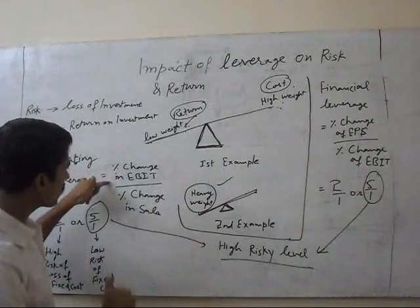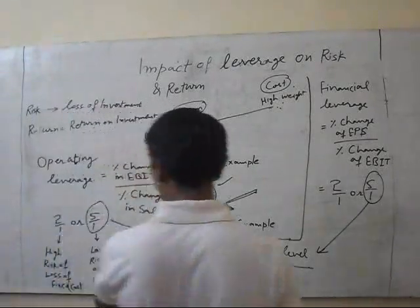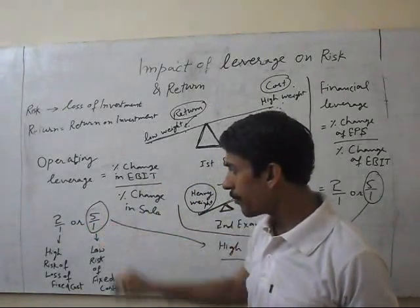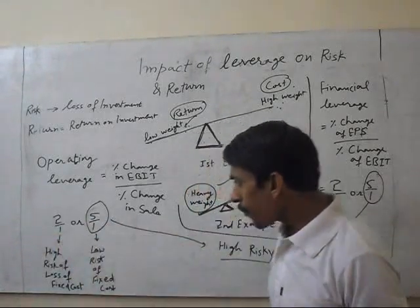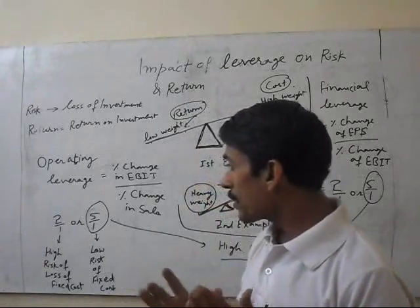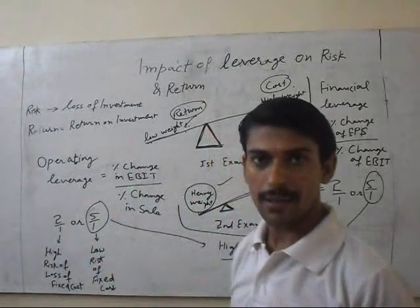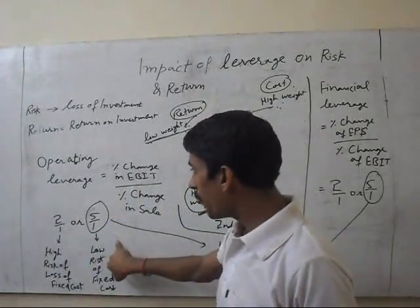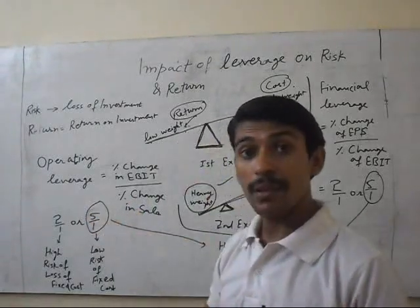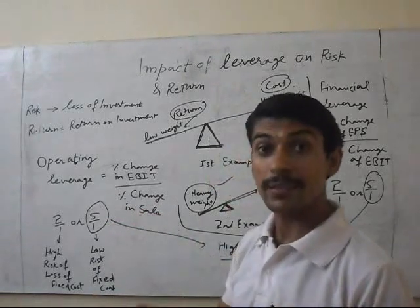Operating leverage means percentage change in earnings before interest and taxes, divided by percentage change in sales. Different outcomes are possible: 2 divided by 1, or 5 divided by 1. This situation carries a high risk of loss due to fixed costs. Because if we increase sales by 1%, our earnings will be double. When we take a small increase in sales, our earning will be very high — that is a good situation. But if the outcome is 10 divided by 1, then this will be too risky.